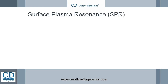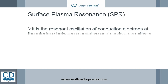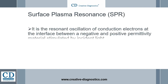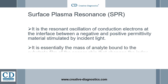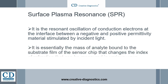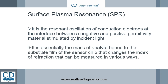Surface plasmon resonance is the resonant oscillation of conduction electrons at the interface between a negative and positive permittivity material, stimulated by incident light. It is essentially the mass of analyte bound to the substrate film of the sensor chip that changes the index of refraction, which can be measured in various ways. No labeled reporter molecule is needed.